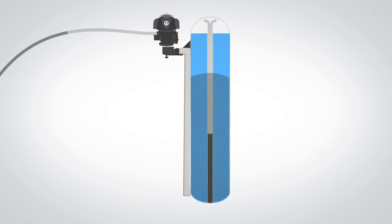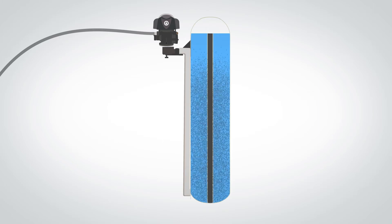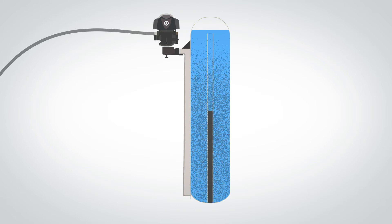It then enters a backwash step, where the control valve directs the flow of water up through the media bed from the bottom of the tank, lifting the bed and flushing any impurities down the riser tube and out the drain line. The backwash step also helps to reorient the media to eliminate any channels that may have begun to form.